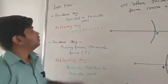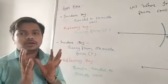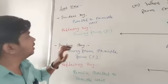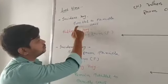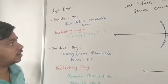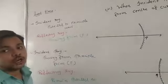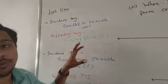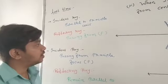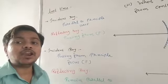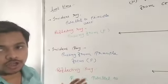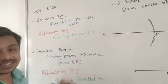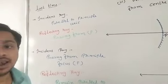In the last video, we have seen some of the specific incident rays about the spherical mirror. The first one: when the incident ray is parallel to the principal axis, after reflection, it just passes from the principal focus. For a concave mirror, the principal focus is on the side of the reflecting surface, so the ray passes from the principal focus after reflection.